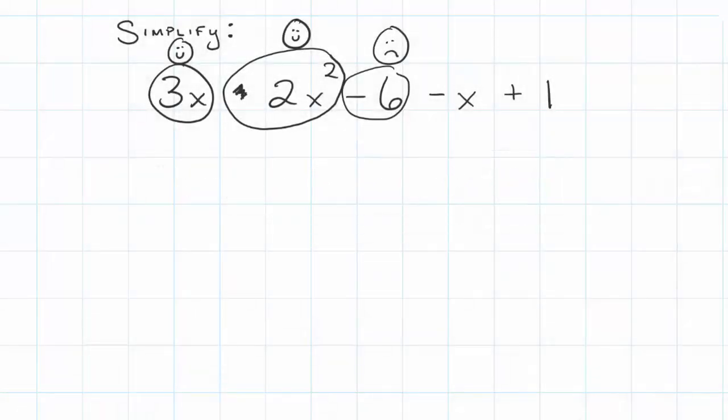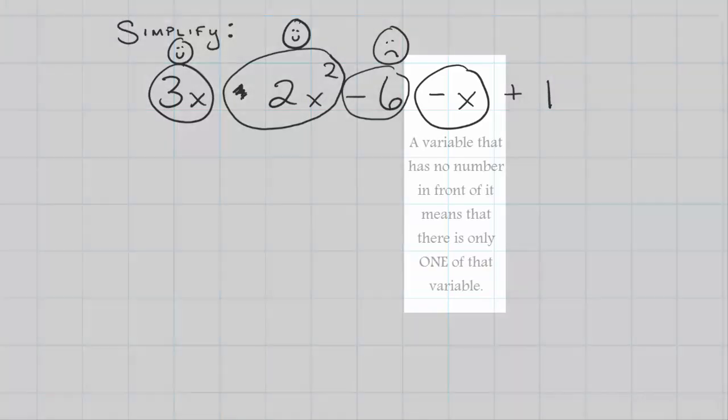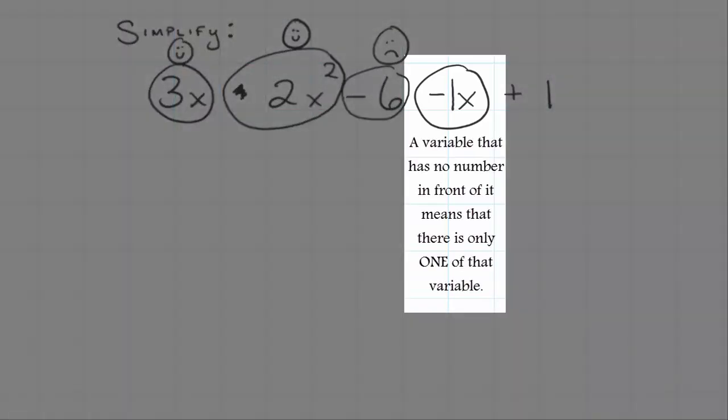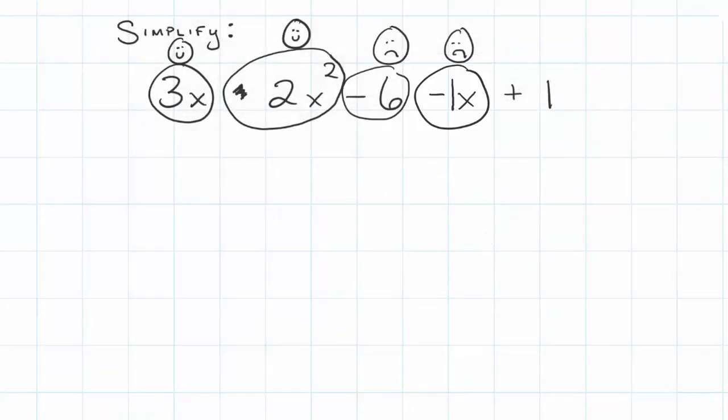I have a negative 6. I have a negative x which there's only one x there so I know that it's 1x. I can put a 1 in front of it or just leave it as negative x. That's negative and I have a positive 1.